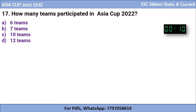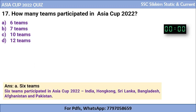Question 17: How many teams participated in Asia Cup 2022? Was it 6, 7, 10, or 12 teams? The correct answer is 6 teams. Those six teams were India, Hong Kong, Sri Lanka, Bangladesh, Afghanistan, and Pakistan — of which Sri Lanka was the winning team and Pakistan was the runner-up in the 2022 Asia Cup.